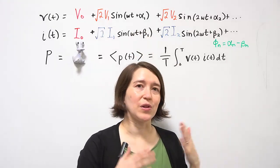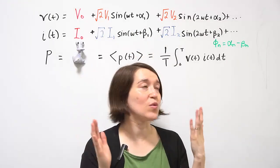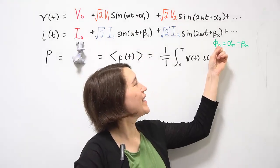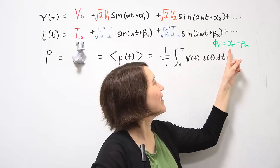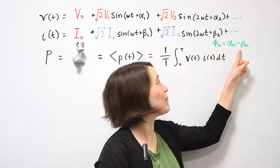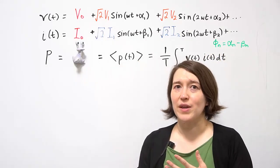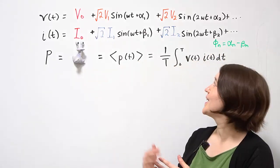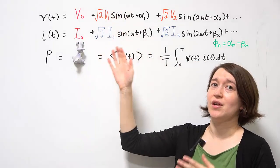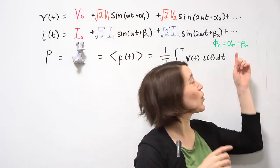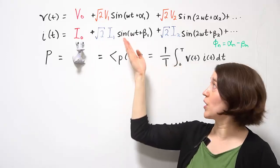For real power we're looking at the difference between the two. So we're actually going to define, in this case, phi of n is going to be defined as alpha of n minus beta of n. So just like when we calculated power, it's the phase shift between the voltage and the current waveform. But this is broken down for each of the individual components.